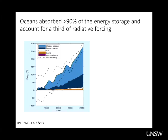From 1970 up to 2011, the upper ocean — 0 to 700 metres — is shown in light blue, and the deep ocean in dark blue. These are in units of zettajoules — something like 270 zettajoules, that's 270 times 10 to the 21 joules of heat absorbed over this period.